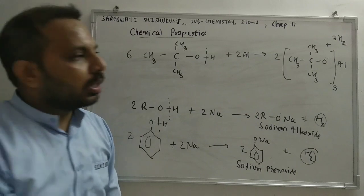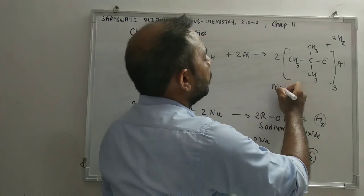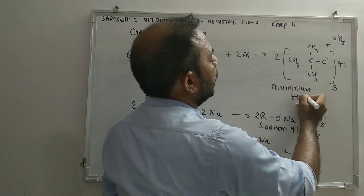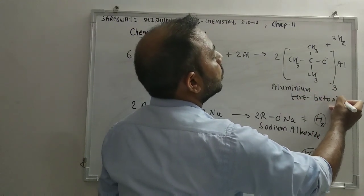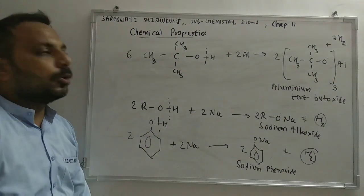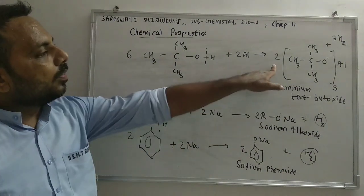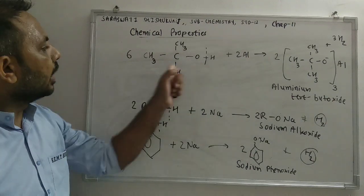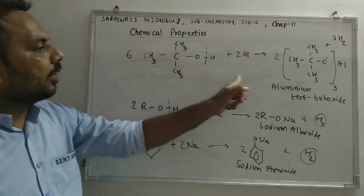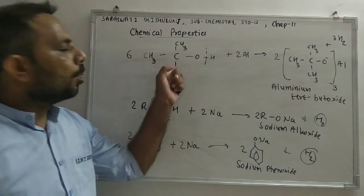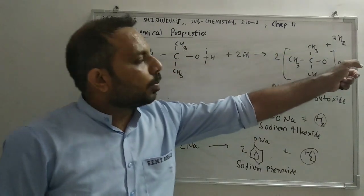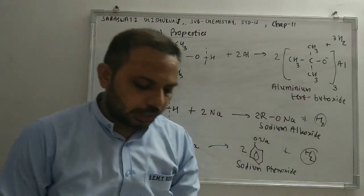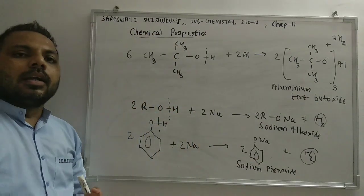The final product is aluminium tertiary butoxide. We write 2 moles because 2 moles of aluminium react with 6 moles of butoxide to form aluminium tertiary butoxide.